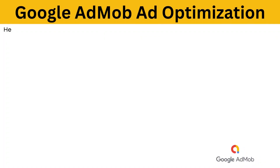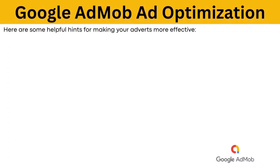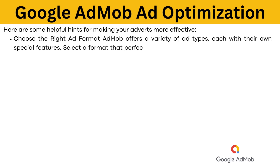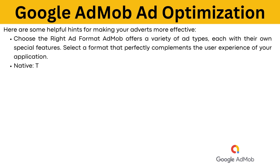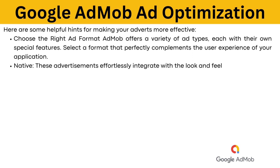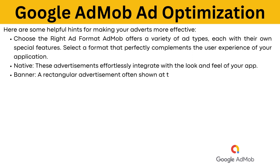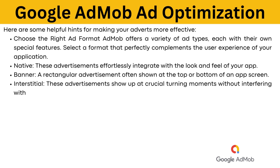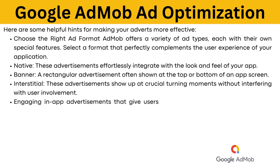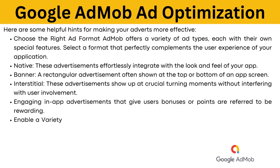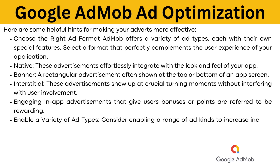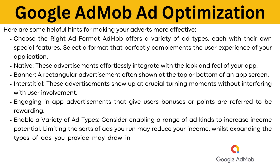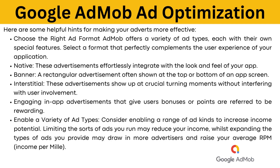Google AdMob ad optimization: choose the right ad format, as AdMob offers a variety of ad types each with their own special features. Select a format that completes the user experience of your application. Native ads integrate effortlessly with the look and feel of your app. Banner ads are rectangular advertisements shown at the top or bottom of an app screen. Interstitial ads show up at crucial turning moments without interfering with user involvement. Rewarding ads are engaging in-app advertisements that give users bonuses or points. Consider enabling a range of ad kinds to increase income potential, as expanding the types of ads you provide may draw in more advertisers and raise your average RPM — revenue per mile.